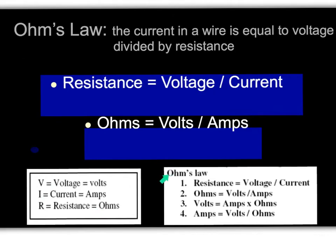When dealing with Ohm's law, we can take the above definition and rearrange it so that resistance equals voltage divided by current, volts equals amps times ohms, or amps equals voltage divided by ohms. We will be using Ohm's law in a series of problems, taking this equation and rearranging it to solve for the unknown. Two of the three components will be stated in the problem, and we will use simple algebraic means to solve for the unknown portion.